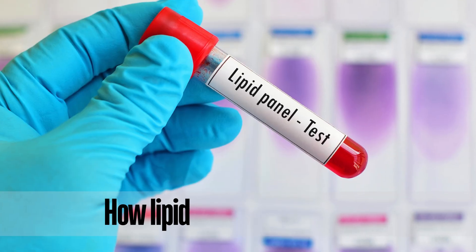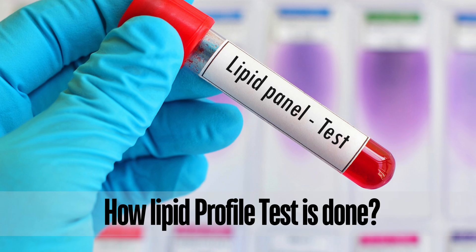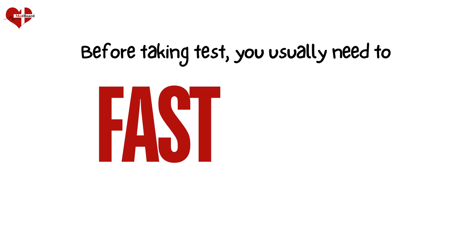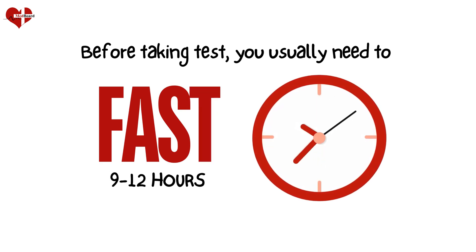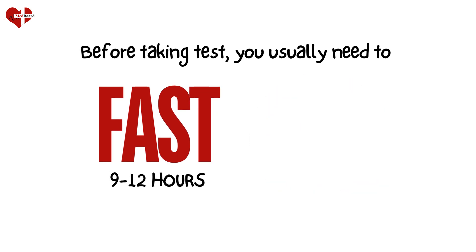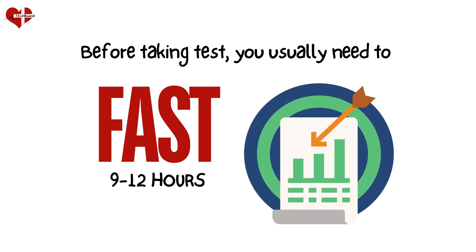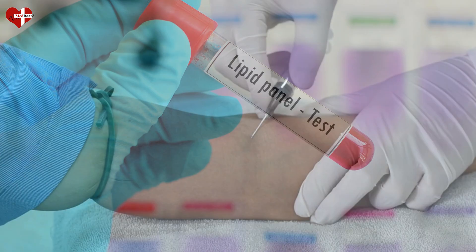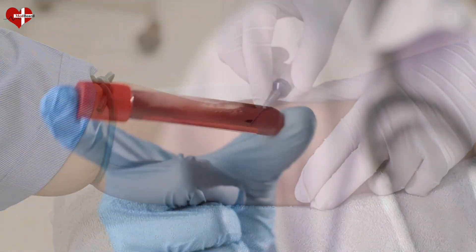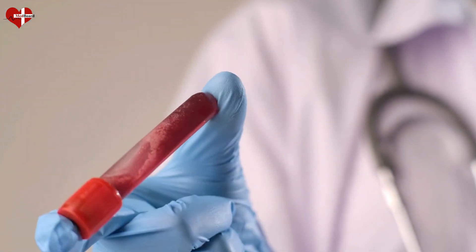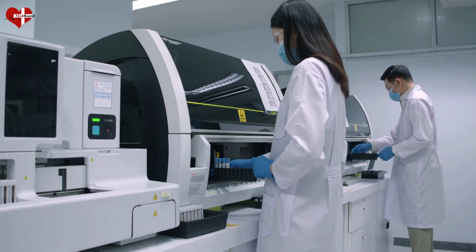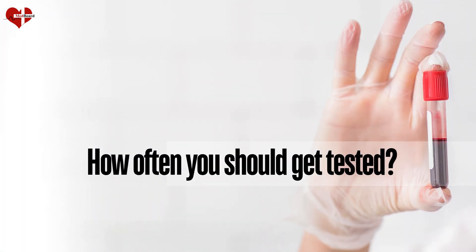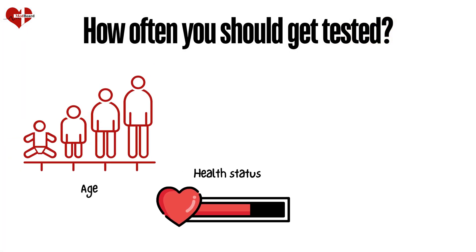Now let's discuss how this test is conducted. Before taking the test, you usually need to fast for 9 to 12 hours, which helps ensure the accuracy of the test results. The test itself is quick and straightforward. A medical professional draws blood from your arm and sends the sample to the lab, where a medical laboratory scientist prepares the sample and conducts tests using analyzers. How often you should get tested depends on your age, health status, and risk factors.